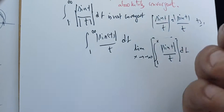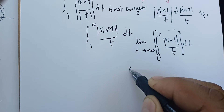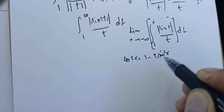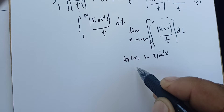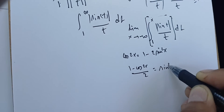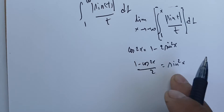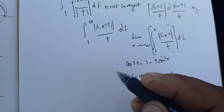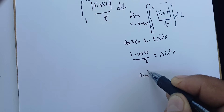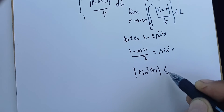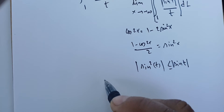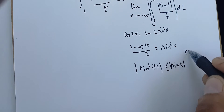The key idea is that cos(2x) = 1 - 2sin²(x), so sin²(t) = (1 - cos(2t))/2. From this we get that sin²(t) ≤ |sin(t)| for all t greater than 1.